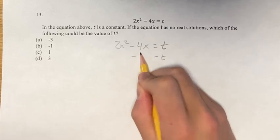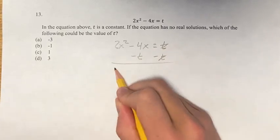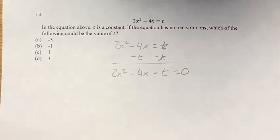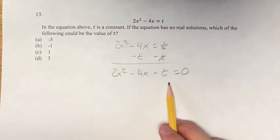So the first thing we do is if we subtract t on both sides, we get 2x squared minus 4x minus t is equal to 0. And now, since t is a constant, we just have a quadratic here,